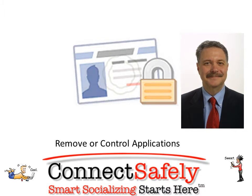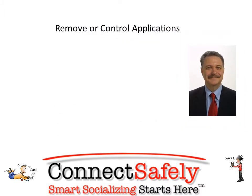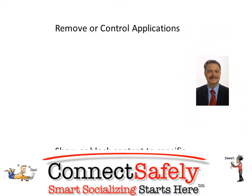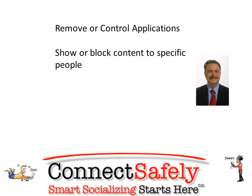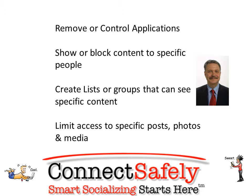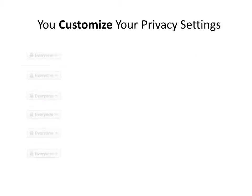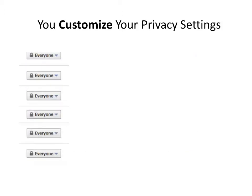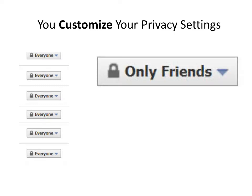In the next few minutes, I'm going to show you how to remove and control applications, block content for specific people, create lists or groups that can see specific content, and how to limit access to specific photos, posts, and other media. Facebook's new simplified privacy controls do make it easier, but you also have the power to customize your privacy settings, and this gives you a lot more power over who can see what.